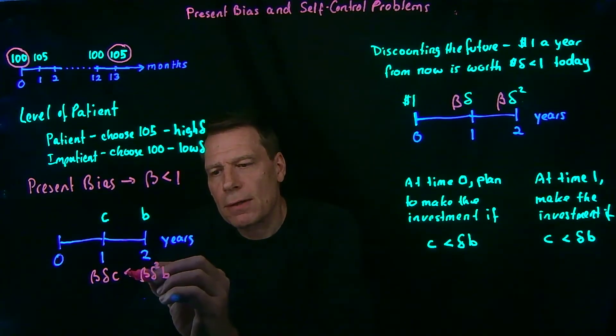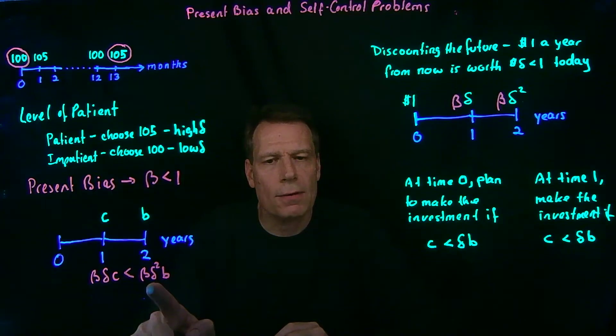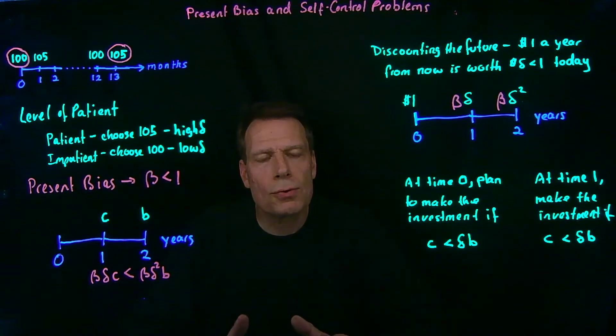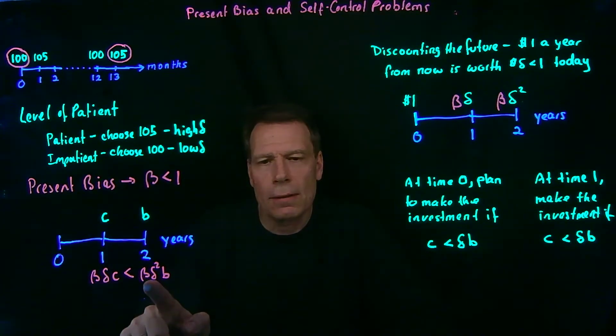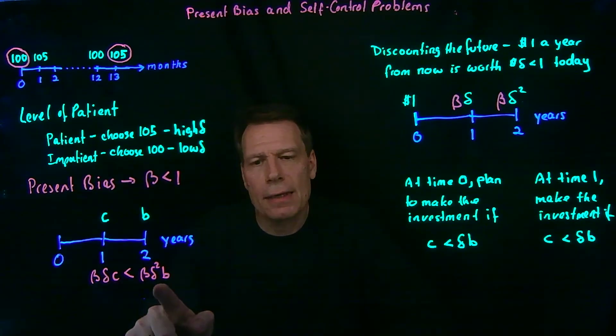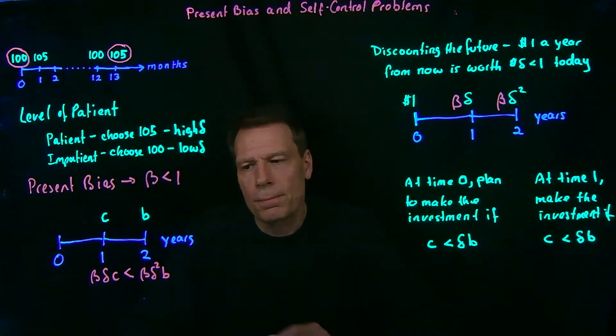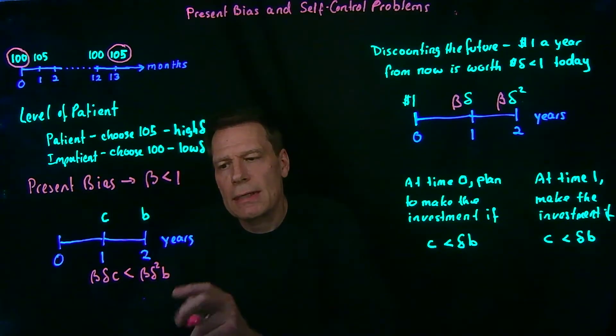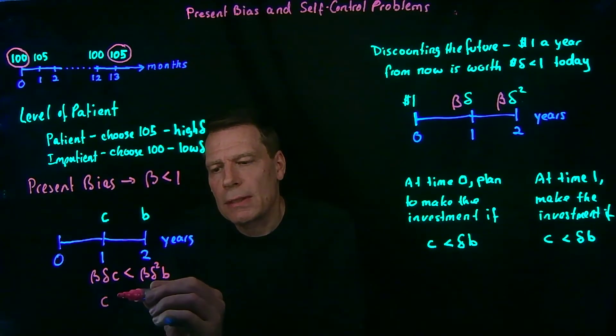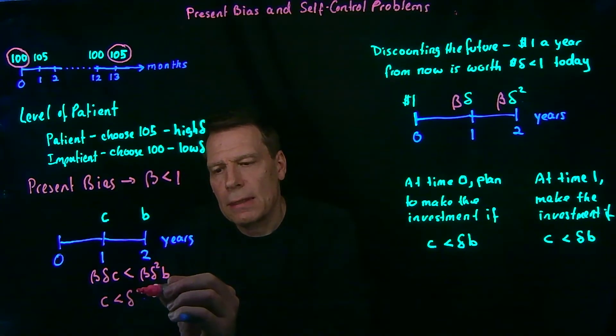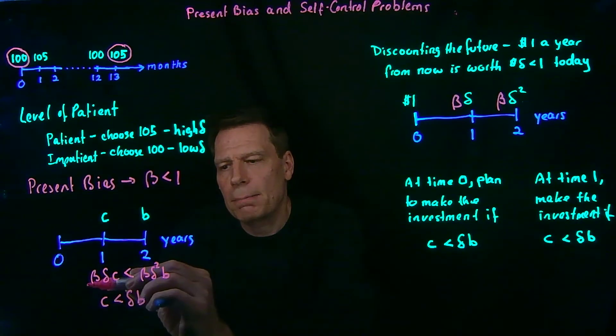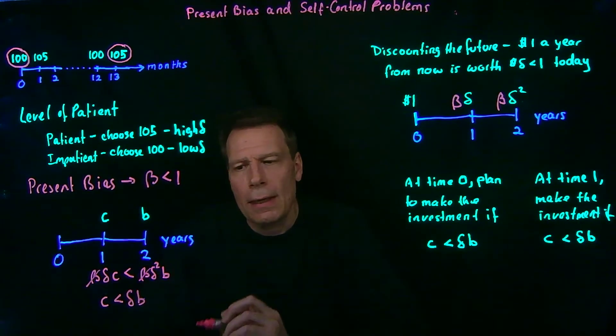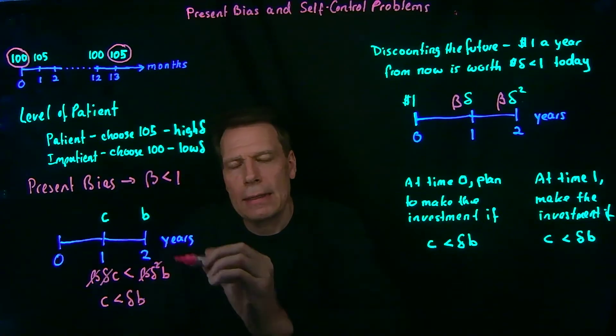As long as the present discounted value of the cost is less than the present discounted value of the benefit, we'll go ahead and choose to plan to make that investment. But now see that we have a beta on both sides, so we can just cancel that. And we can divide by delta to get rid of the delta on this side and the exponent on this side. So this inequality is exactly equal to the equality c is less than delta b.